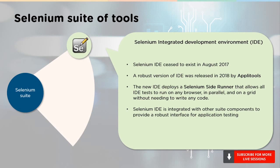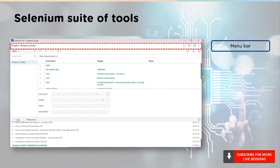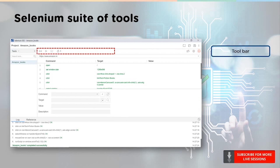This new interface came with a Selenium side runner that allowed all IDE tests to run parallely on multiple browsers. Now let's look at the typical interface and understand its components. First up on the top, we have the menu bar, where you can either create a new project, open an existing project, or even save a project. After that, we have the toolbar. We can run all the tests if we have multiple test cases, or run the current test. IDE also has a debugger option used for step execution, and you can regulate the speed of execution.